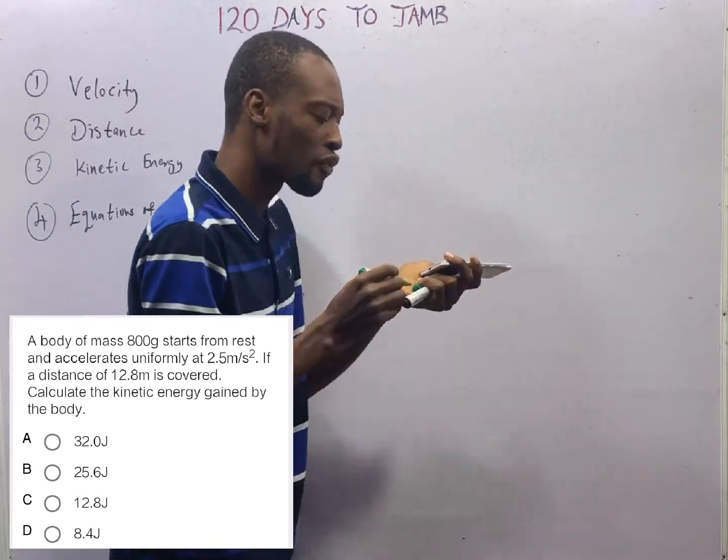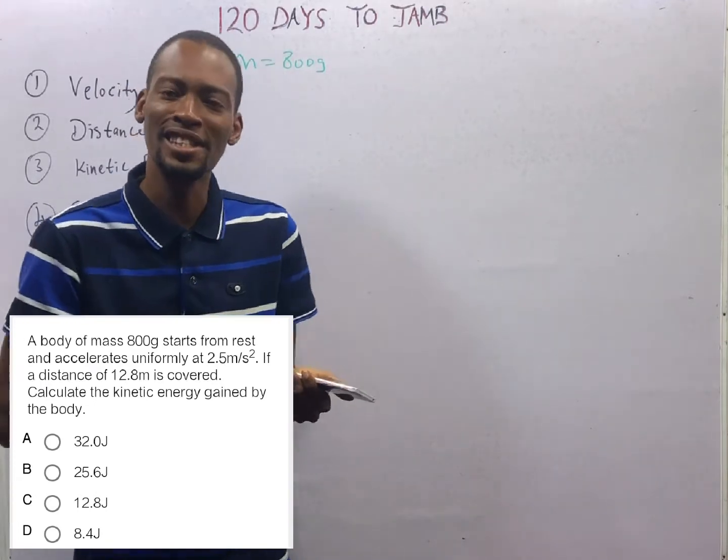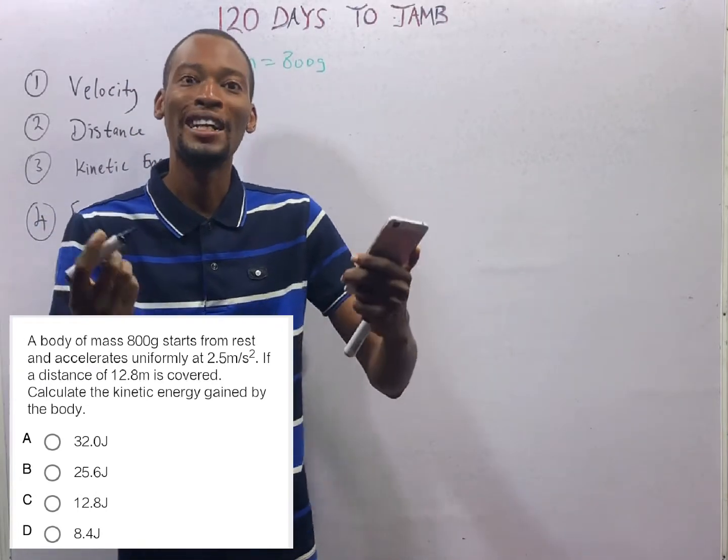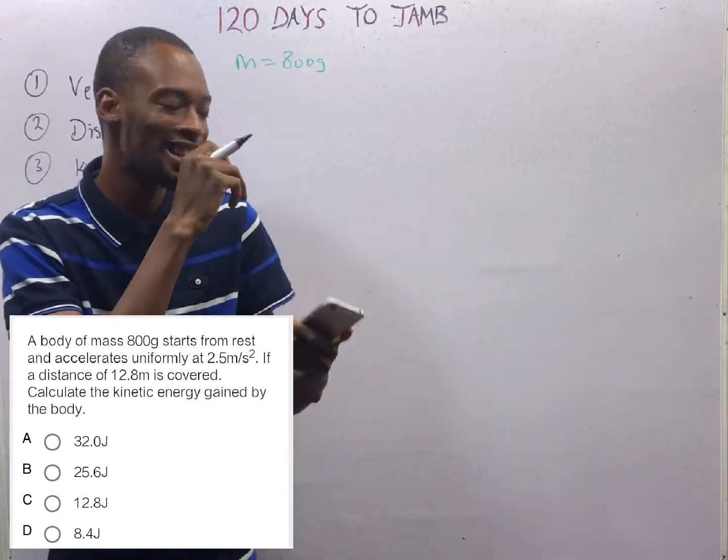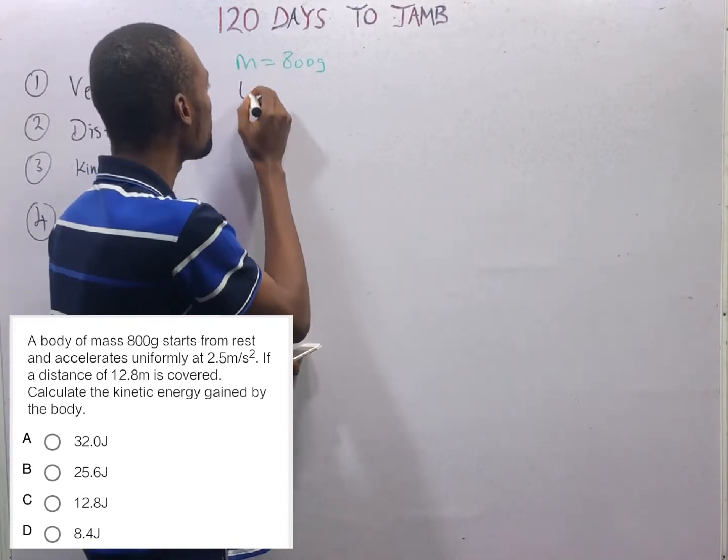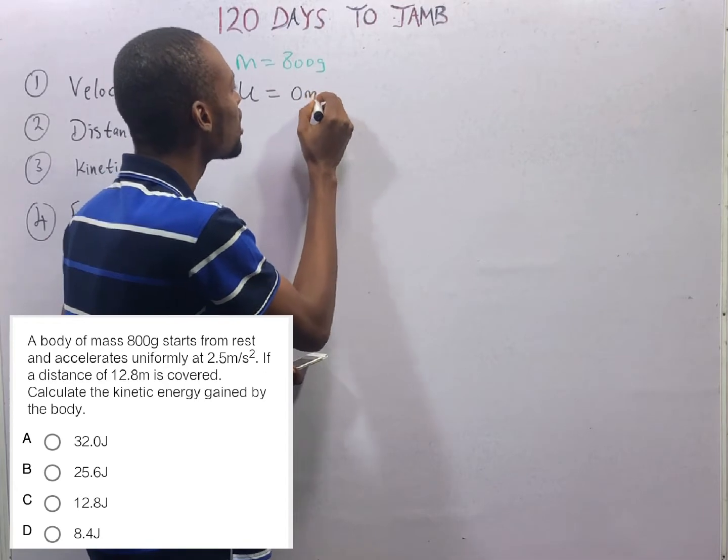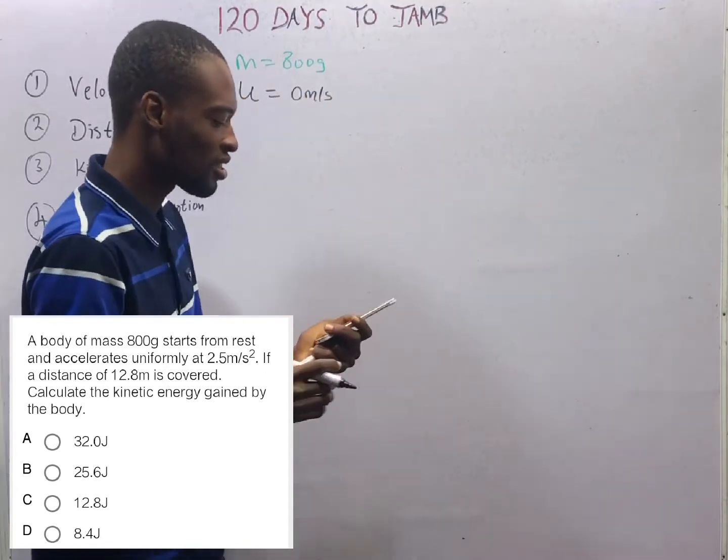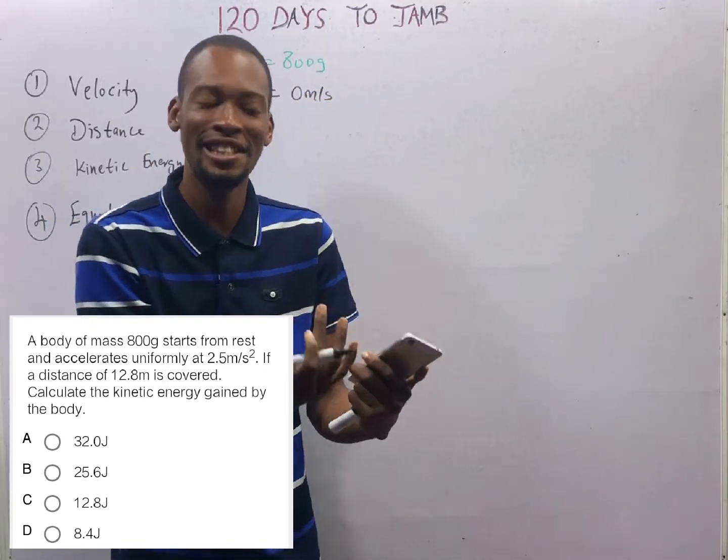Starts from rest. In physics, when a body or an object starts from rest, it simply means that initial velocity is equal to 0 meters per second. This is a way of disguising initial velocity.